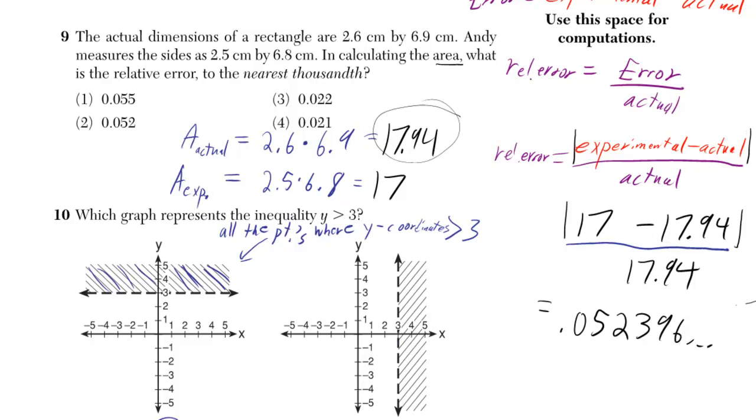But they want it to the nearest thousandth, so focus on the tenth place, hundredth place, thousandth place. Look to the number to the right of the thousandth place, see if it's 5 or above. If it's not, keep it the way it is, so you just leave it as 0.052.